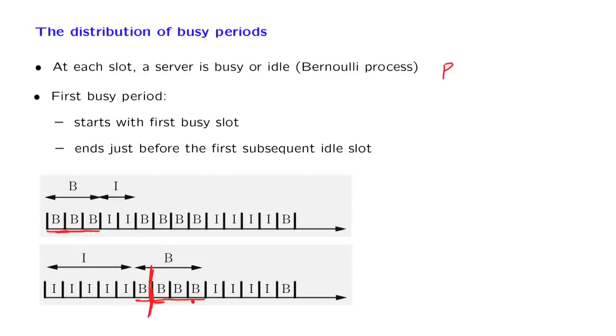How long does it take until the first success? We know that this is a geometric random variable with parameter equal to the probability of success. Since we are thinking of the idle slot as being a success, the parameter in this case is going to be 1-p.